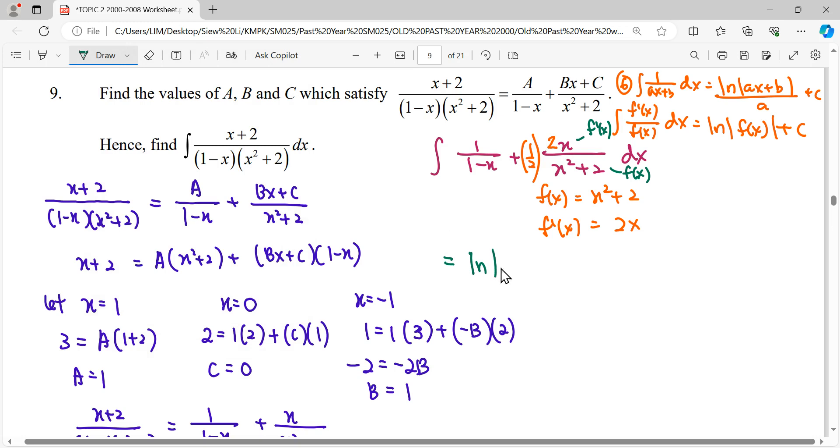Here we have ln of 1 minus x over the coefficient negative 1, then 1 over 2 is a coefficient, ln to the function x squared plus 2, and then plus C. So we simplify it. Over negative 1 means negative.